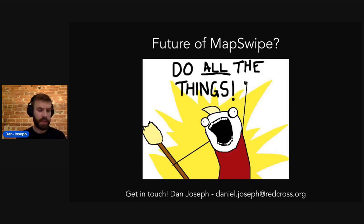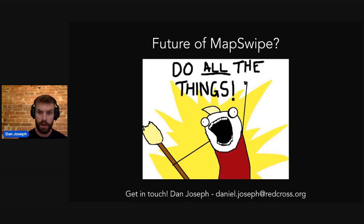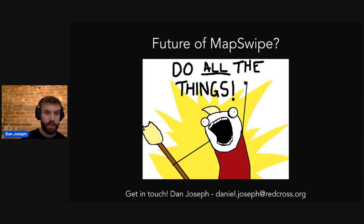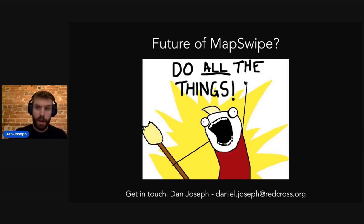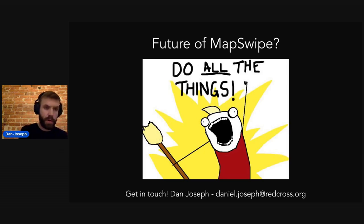We're very interested in how we might expand the functionality. Can we use MapSwipe to directly edit OSM? Could we use it to contribute to localized machine learning models? Can we integrate with other platforms like MapRoulette or Pick4Review? Maybe incorporating street level imagery, not just aerial imagery. So there are lots of exciting avenues. If you have ideas, we'd love to hear them. Please get in touch and check out MapSwipe on the App Store. Thank you.